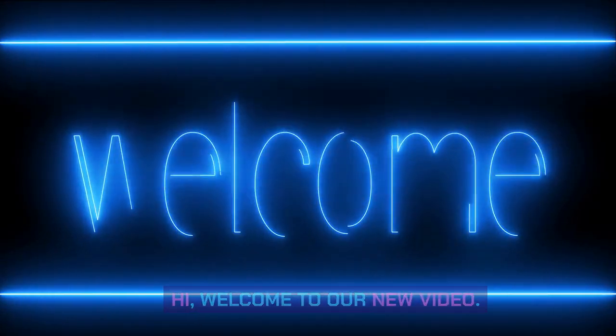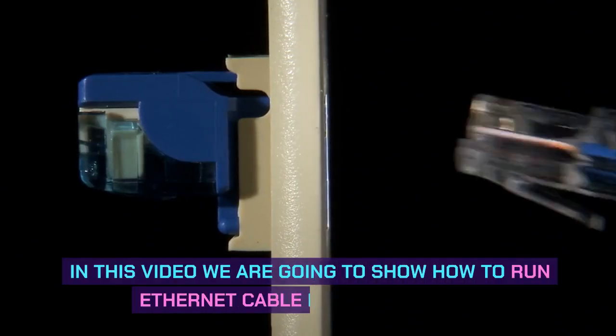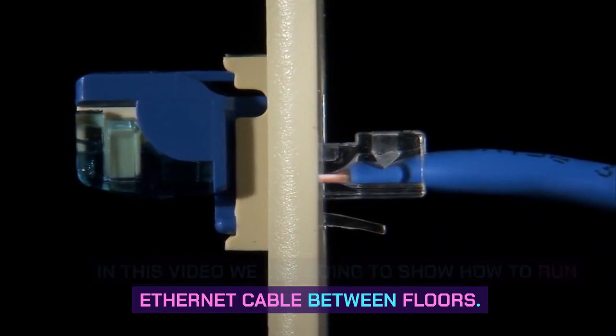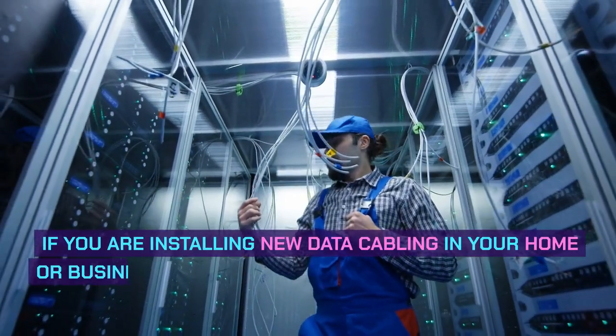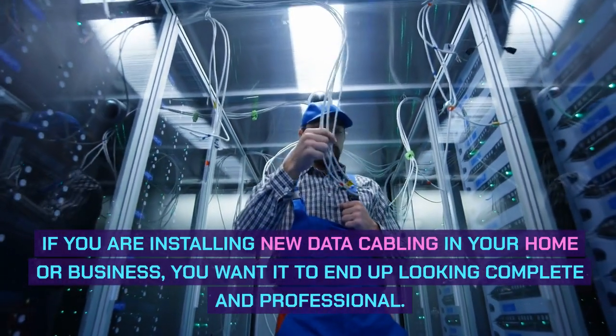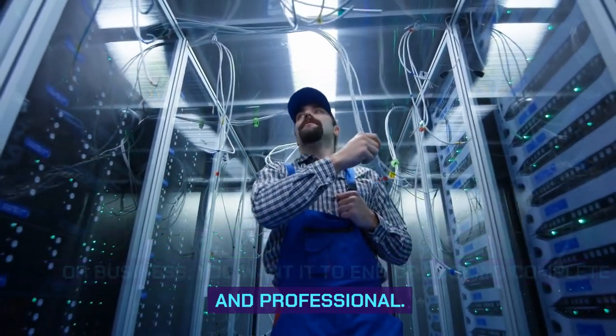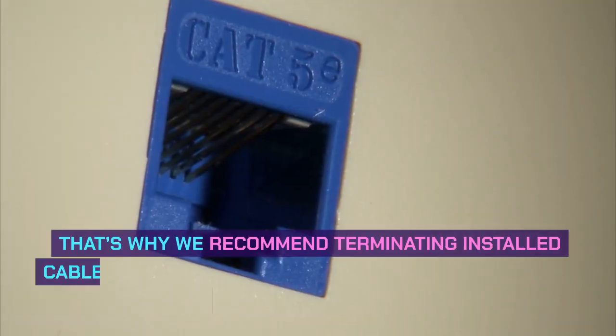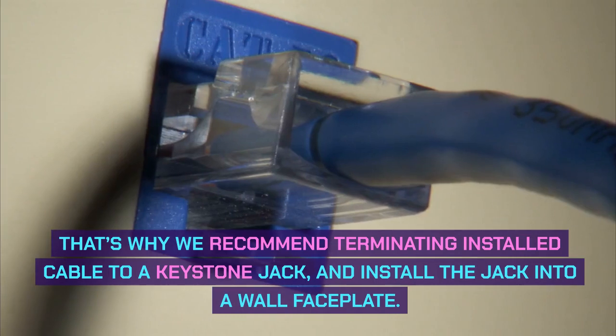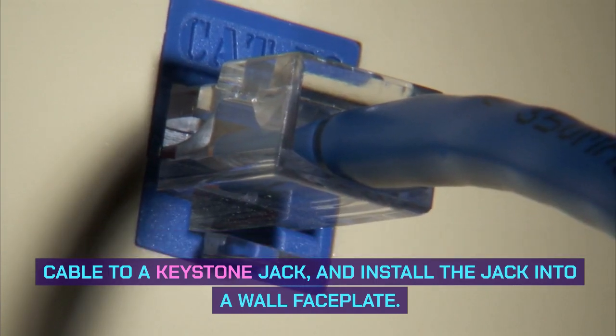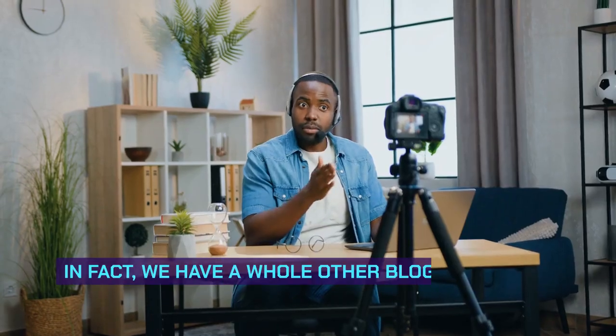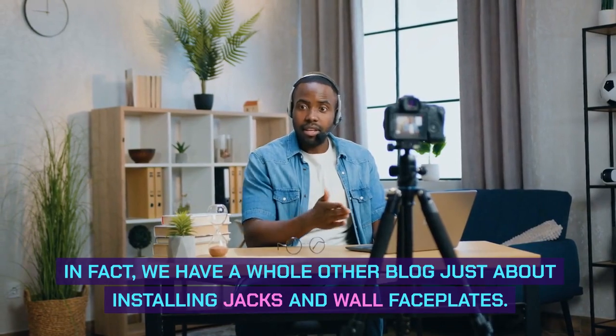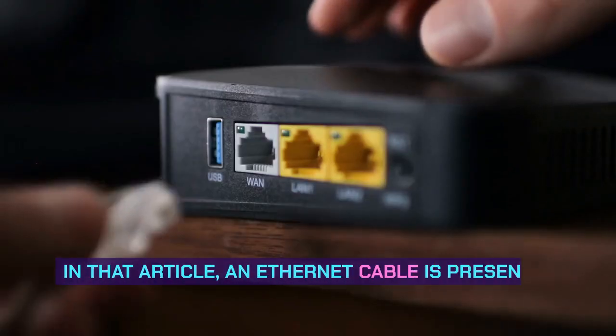Hi, welcome to our new video. In this video, we're going to show how to run ethernet cable between floors. If you're installing new data cabling in your home or business, you want it to look complete and professional. That's why we recommend terminating installed cable to a keystone jack and installing the jack into a wall faceplate. In fact, we have a whole other blog about installing jacks and wall faceplates where an ethernet cable is shown extending out through a hole in the wall.